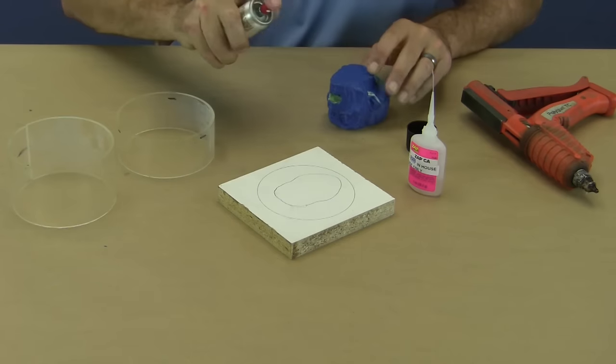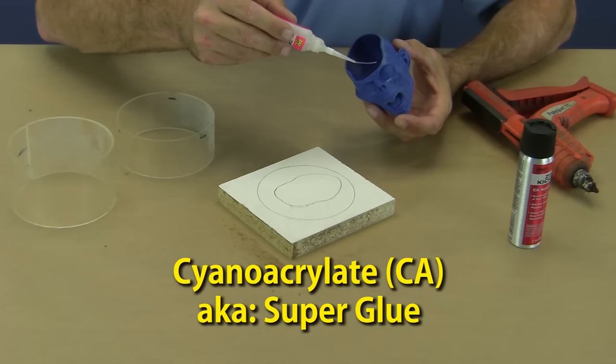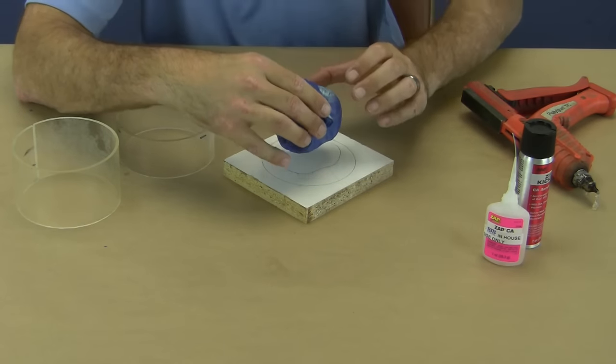We'll go ahead and mark where to mount the skull to the baseboard and attach with a thin bead of super glue. Having the marks on the board allows us to quickly place the skull in a precise manner.